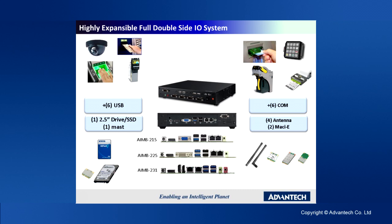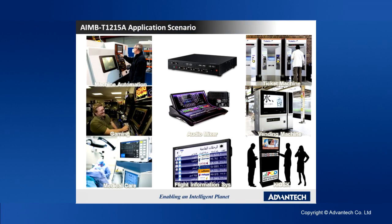It can accommodate three boards: AMB-215, AMB-225, as well as AMB-231 — one enclosure for three different boards for three different types of markets. If we use the AMB-215 as an example, the part number would be named AMB-T1 for the enclosure and 215 for the board inside. The AMB-215 is a Bay Trail Mini-ITX board.